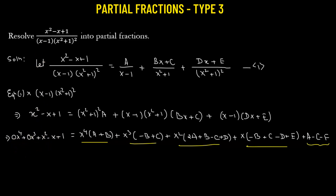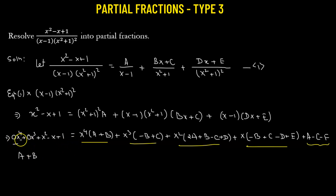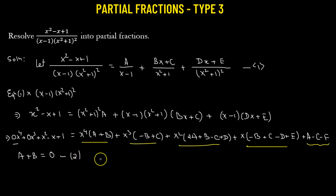Comparing and equating both sides: the coefficient of x to the power of 4 gives a plus b equals 0 — that's equation 2. Equating the coefficient of x cubed gives negative b plus c equals 0 — that's equation 3.